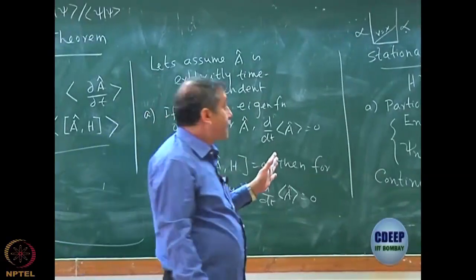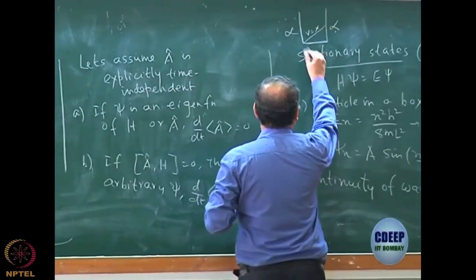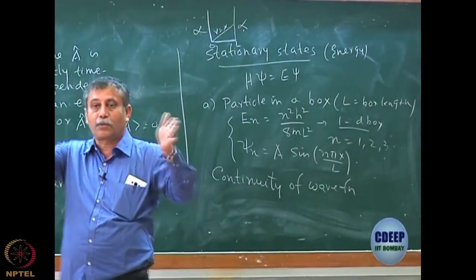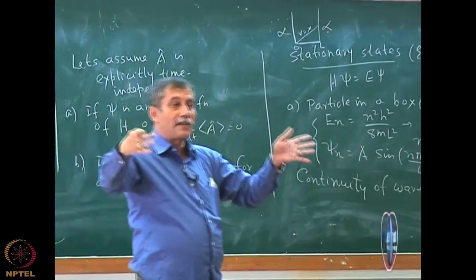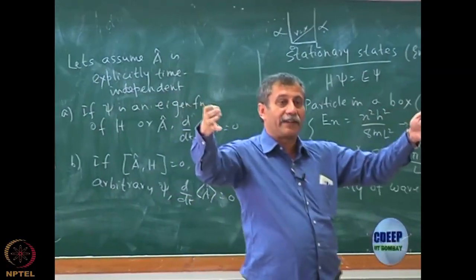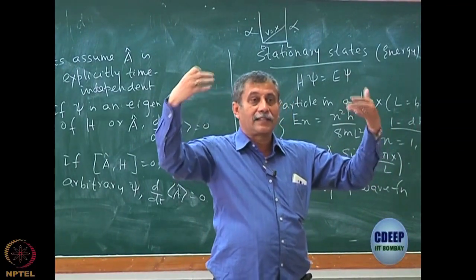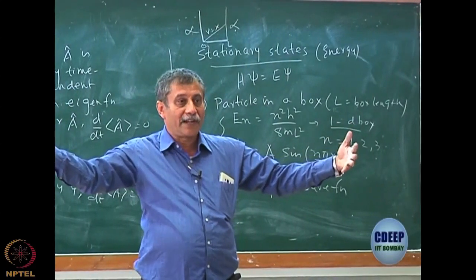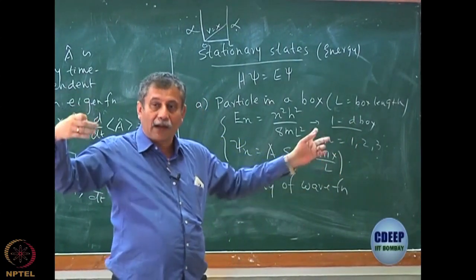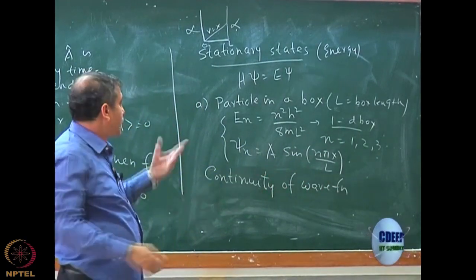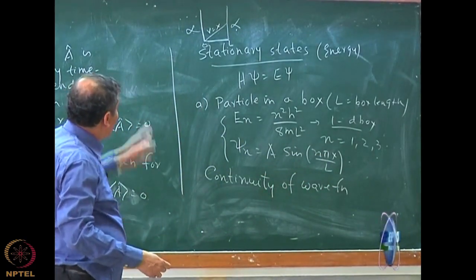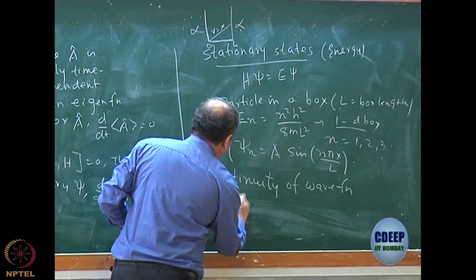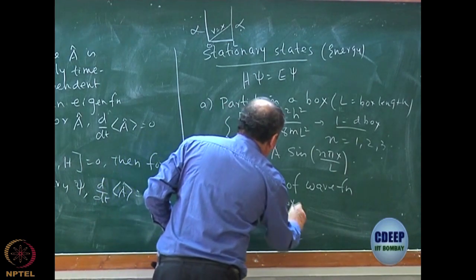I also discussed that the coordinate need not be 0 to L — it may be minus L/2 to plus L/2. In that case, the eigenfunctions will be either symmetric or anti-symmetric, which is a consequence of the Hamiltonian being invariant under the parity operator. This is exactly what comes up for the harmonic oscillator. We also looked at 2D and 3D boxes and their degeneracies.